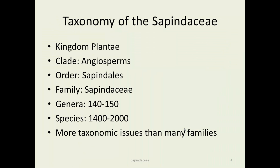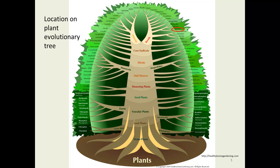The order Sapindales has 150 to 140 genera and up to 2,000 species depending on taxonomists. There's been a lot of reorganization in this family recently. It used to be that the maples were in their own family, the Aceraceae, and the buckeyes had their own family. Both have been added into this family in recent years, so the Aceraceae no longer exists technically. We're in the Sapindales, over a little bit farther down on the right in the rosid group of the true dicots.